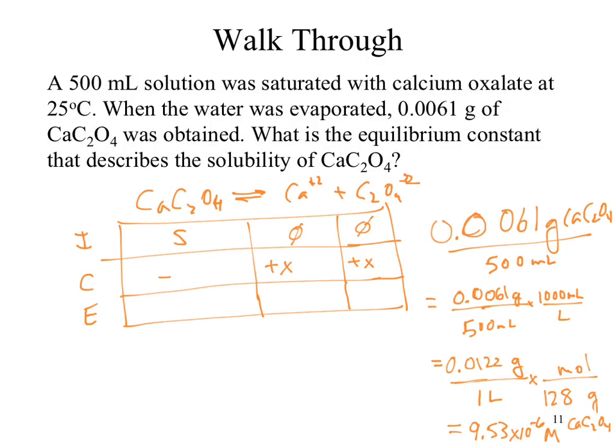Whatever dissolved of our solid went immediately into our ions. So instead of saying negative X, we can say, or saying negative S, we can say that is X. That's how much actually dissolved, which means according to all our math, that X equaled our 9.53 times 10 to the minus 6 molar would dissolve in water. What's our KSP?